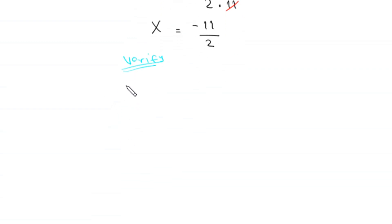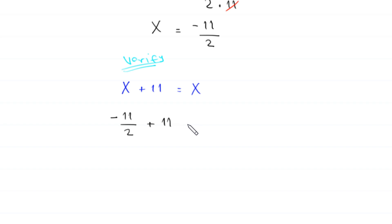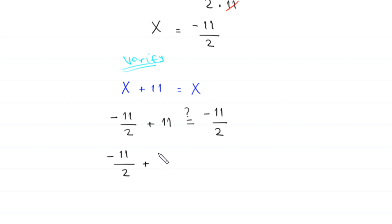The original equation is x plus 11 equals x. We replace every x with negative 11 over 2. This becomes negative 11 over 2 plus 11, and we check whether this equals negative 11 over 2. We rewrite 11 as 22 over 2.